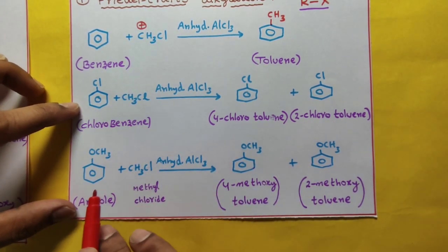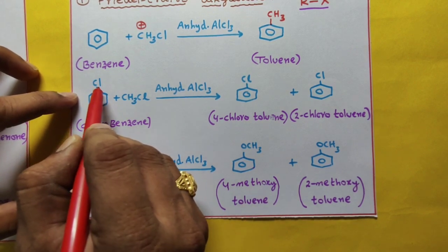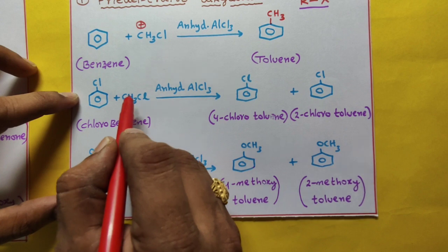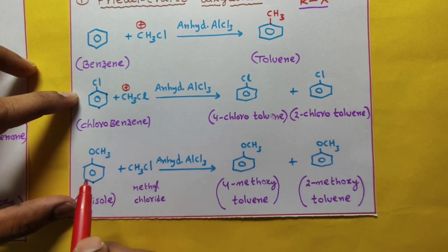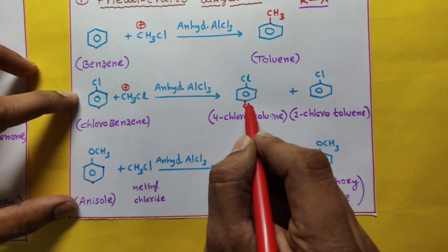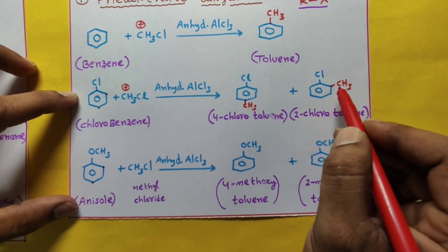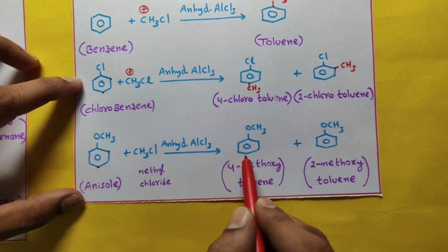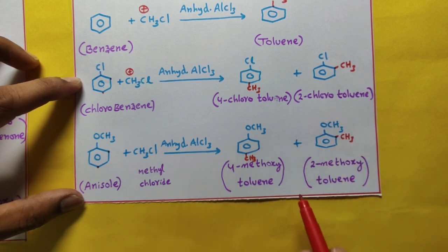Let us compare and learn these 2 reactions — for chlorobenzene and anisole. The chlorine group is an ortho-para directing group, and OCH3 is also an ortho-para directing group. So CH3+ attacks at the para position and ortho position for both reactants. Write CH3 at the para position and ortho position — giving 1,4 and 1,2 substituted products. Compare and learn, easily remember.